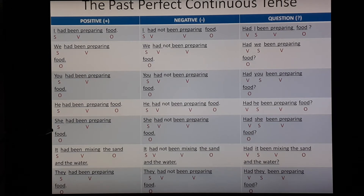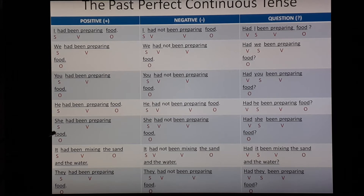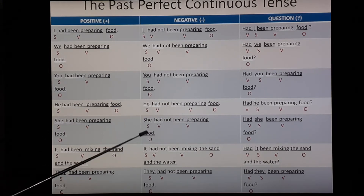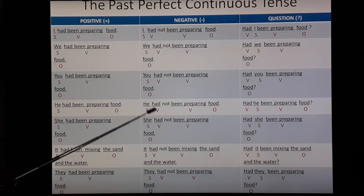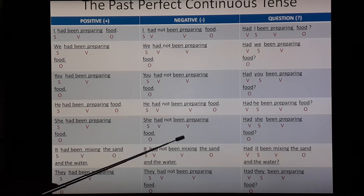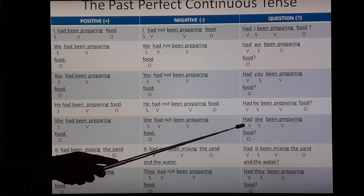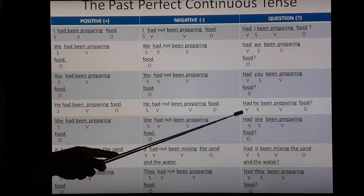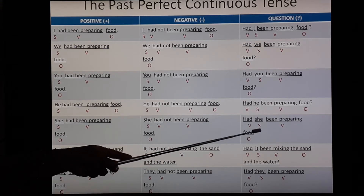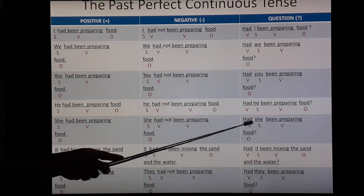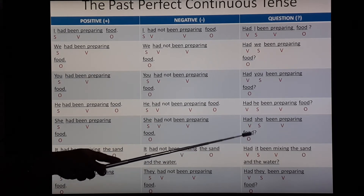Third person singular: She. 'She had been preparing food.' 'She' is subject, 'had been preparing' is verb or predicate, and 'food' is the object. Negative: 'She had not been preparing food.' 'She' is subject, 'had' is verb, then put 'not', 'been preparing' is verb, and 'food' is the object. Interrogative form: 'Had she been preparing food?' 'Had' is verb, 'she' is subject, 'been preparing' is verb, 'food' is object, then put a question mark.